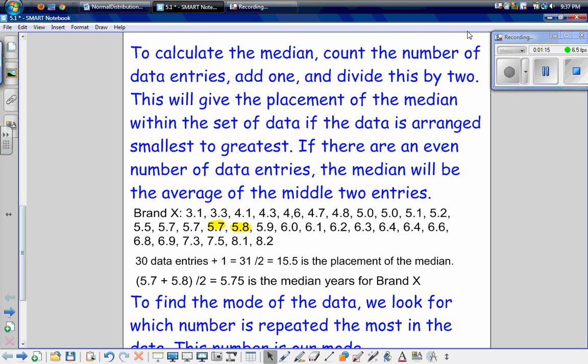To calculate the median, we have to count the number of data entries, add 1, and then divide this by 2. This will give us the placement of the median within the set of data if the data is arranged smallest to greatest. So if there's an even number of data entries, the median will end up being the average of the middle two entries. For brand X, we have 30 data entries plus 1 equals 31. We're going to divide that by 2 to get 15.5. So 15.5 is our placement of the median. We count in 15, and we get here. So this is our 15th. But it's 15 and a half, so we have to take the average of these two numbers. So we have 5.7 plus 5.8 divided by 2 equals 5.75, which is the median years for brand X.